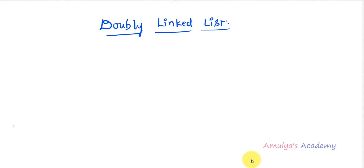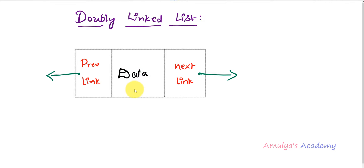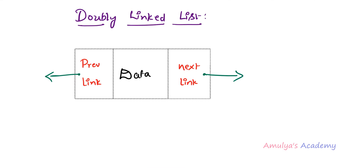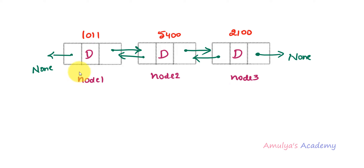We can represent the node of a doubly linked list like this: it contains a data field, a next link pointing to the next node, and a previous link pointing to the previous node. In a doubly linked list with three nodes, every node contains a data field and two links. The first node contains a data field, a next node reference, and a previous node reference that stores none or null since it has no previous node.